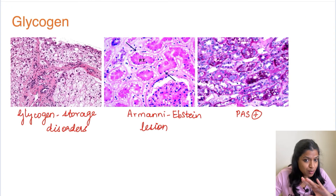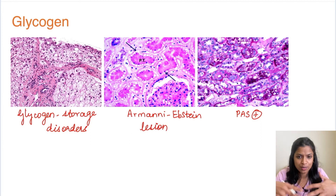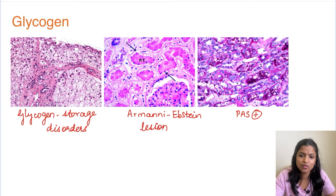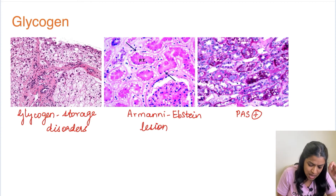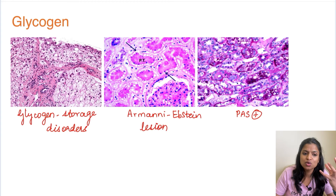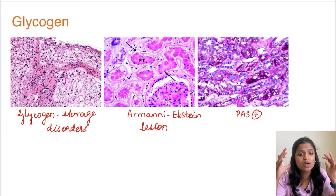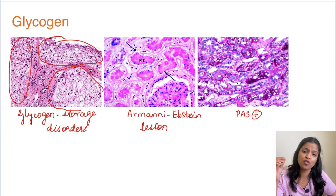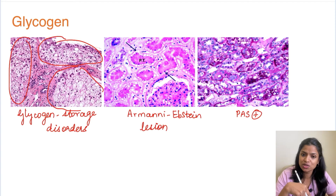Now moving on to glycogen accumulation. When glucose or glycogen metabolism is deranged, glycogen or glucose accumulates. The first example is glycogen storage disease — such as Von Gierke's disease. In these storage disorders, excess glycogen accumulates inside macrophages, making them foamy. The histological image shows clusters of foamy macrophages laden with glycogen, which is the characteristic image of a glycogen storage disorder.